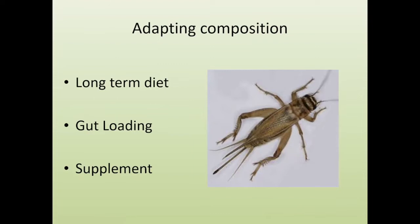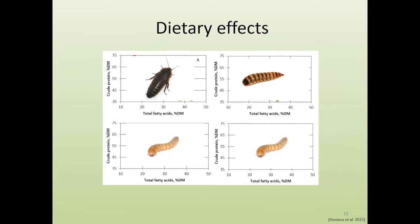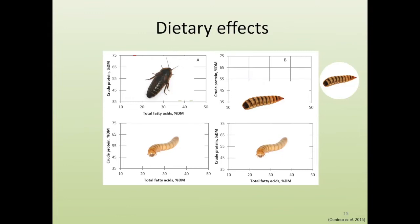Dietary effects on insect composition can differ between species and can be fairly large. Looking at black soldier fly larvae provided with different diets, the total fatty acid content ranges from about 20 to almost 40 percent — a relatively large difference. The protein content varies between 35 and 45 percent — not as wide, but still notable. Each icon in the chart represents a different diet.